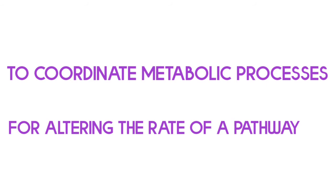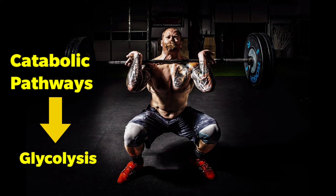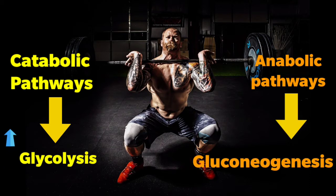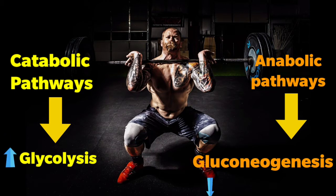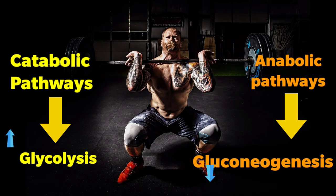During vigorous exercise, the energy requirement increases. To meet this demand, the rate of energy-yielding catabolic pathways is increased, whereas the rate of energy-requiring anabolic pathways is suppressed. The rate of catabolic pathways is increased by increasing the activity of the relevant enzymes, whereas the rate of anabolic pathways is decreased by suppressing the activity of the enzymes involved in those pathways.